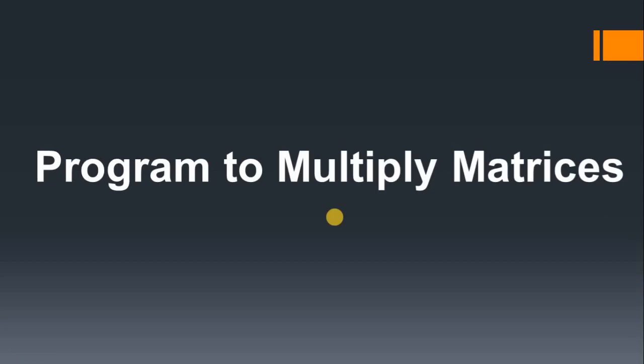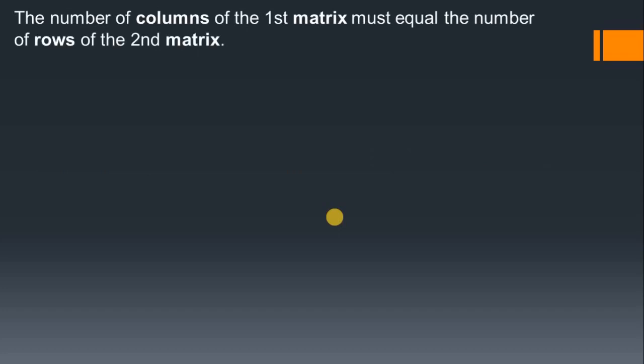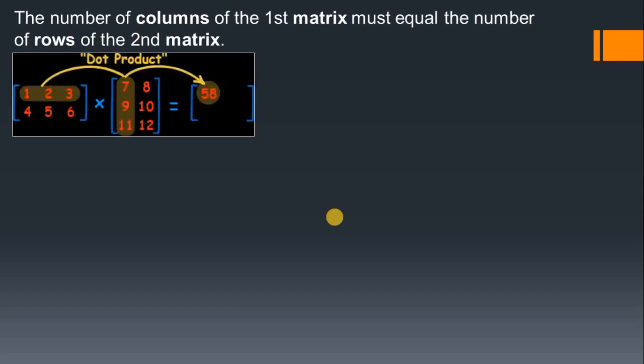Our next task related with matrices is to multiply matrices. We will see the multiplication between two matrices, which is quite different from addition and subtraction. The important thing is that the number of columns of the first matrix must equal the number of rows of the second matrix — that is the condition you have to follow while doing multiplication of two matrices.